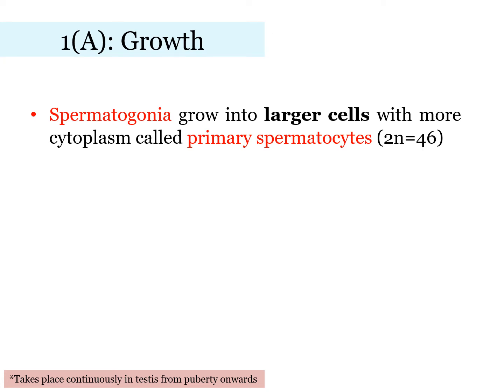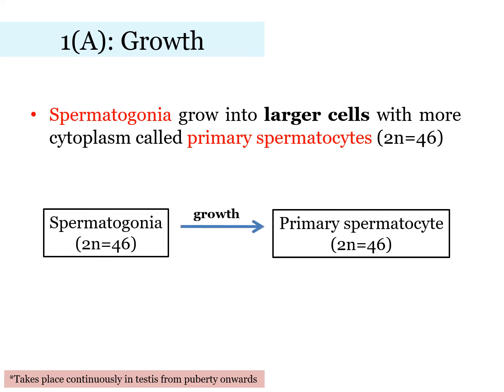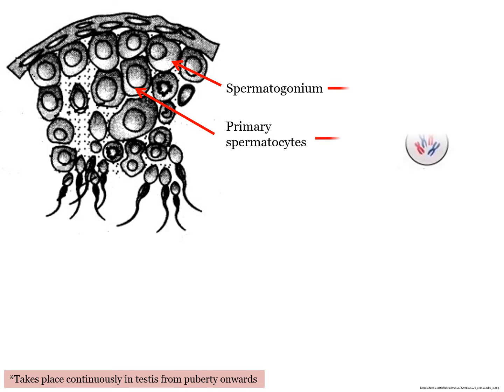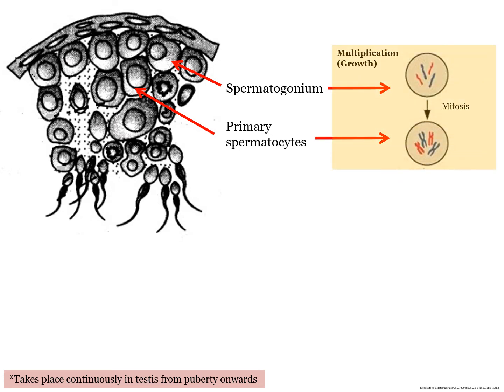Under this phase, the diploid spermatogonia will further grow into larger cells with more cytoplasm. At this stage, they are called primary spermatocytes. So, under Phase 1, multiplication, the germinal epithelium cells at the wall of the seminiferous tubule start to divide mitotically, producing spermatogonia. Next, spermatogonia grow larger and are now called primary spermatocytes.